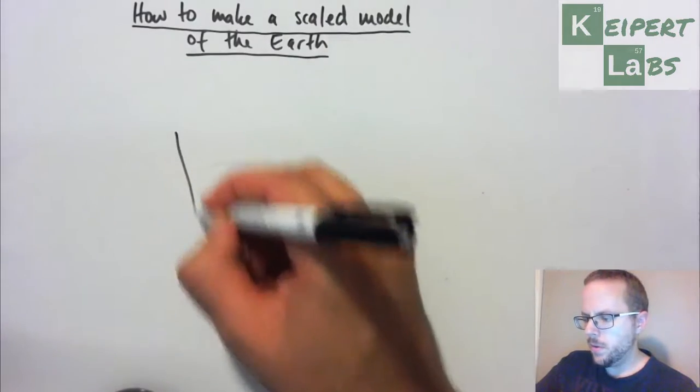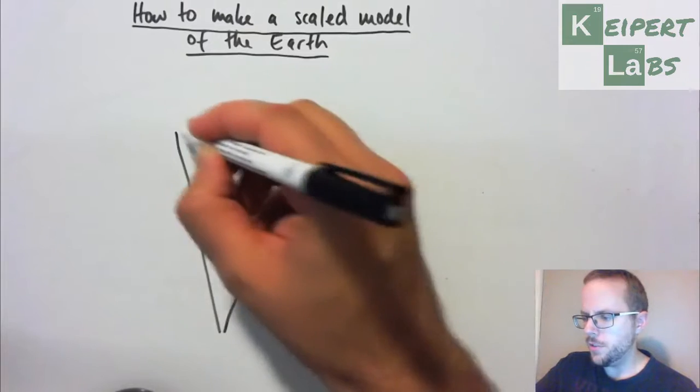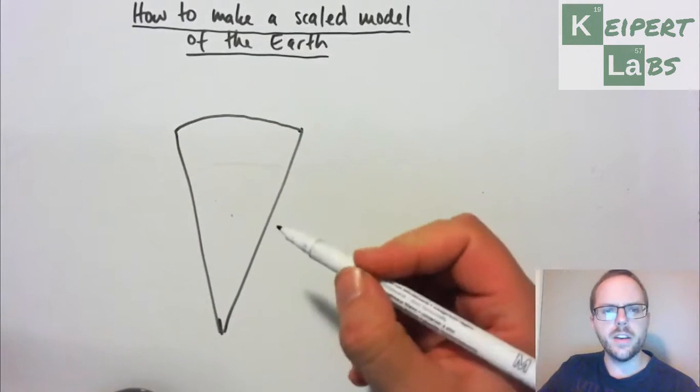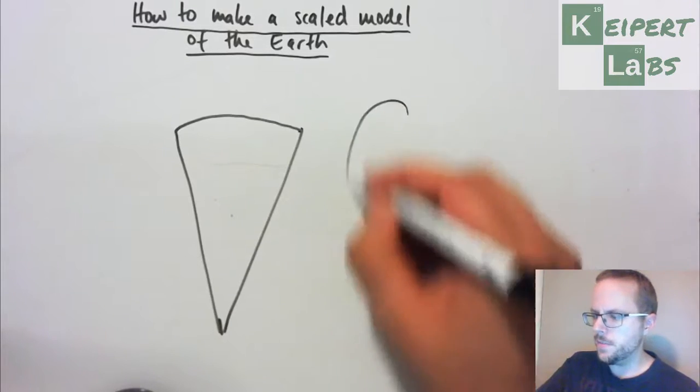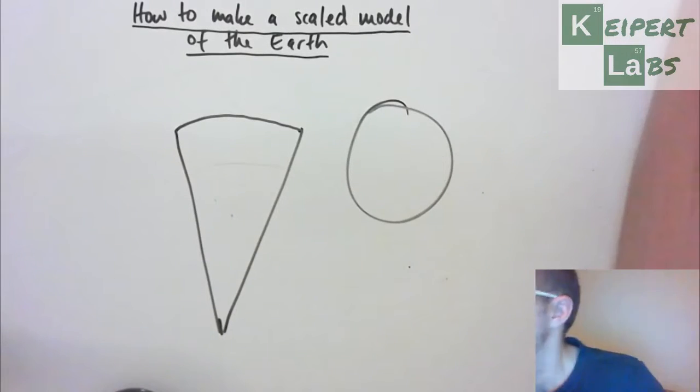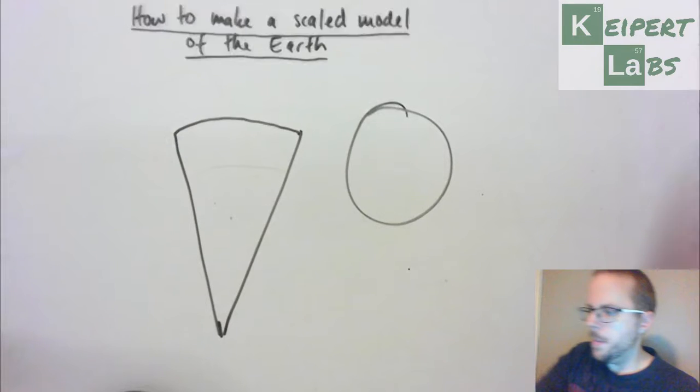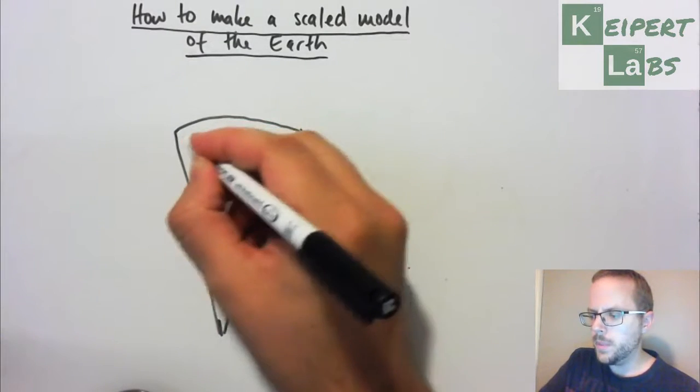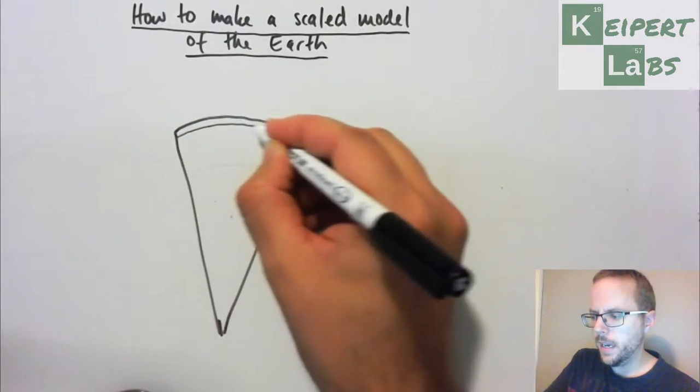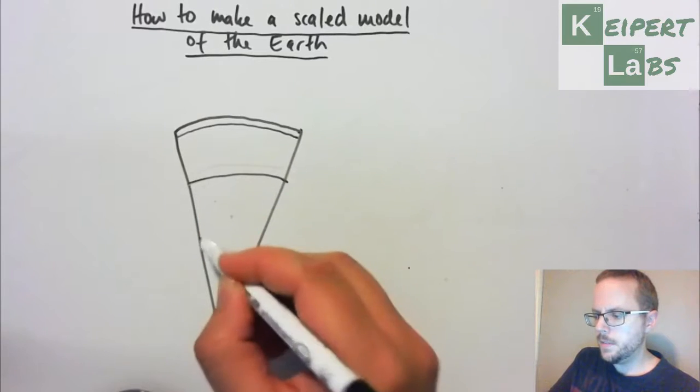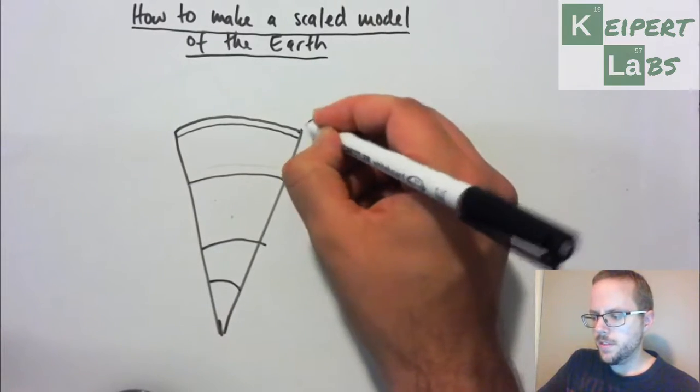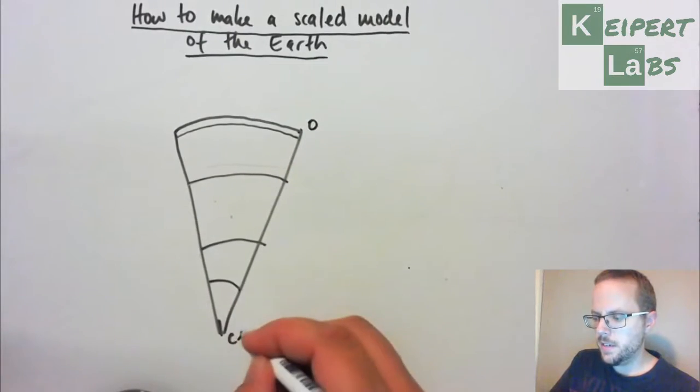We've briefly introduced this concept that if we could take the Earth as a sphere, or at least close enough to it for our purposes, and if we could actually take a knife or take something and cut it down, we would see that like a cake, there would be layers existing inside our Earth, going from the surface all the way to the centre.